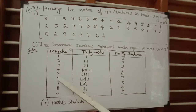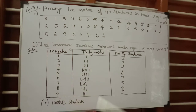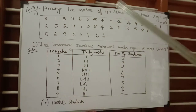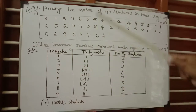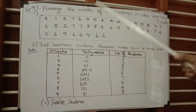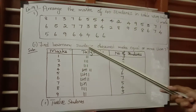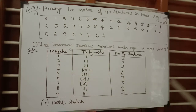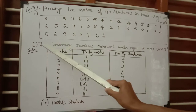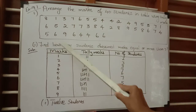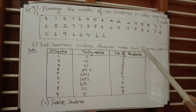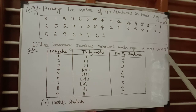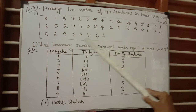Similarly, count for marks six, seven, eight, and nine. Count how many times each particular number has been repeated, draw the corresponding tally marks, and list out the number of students. After completing the tabular column, we can address the main question: find how many students obtain marks equal to or more than seven.